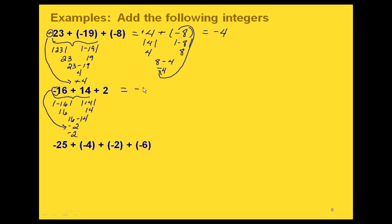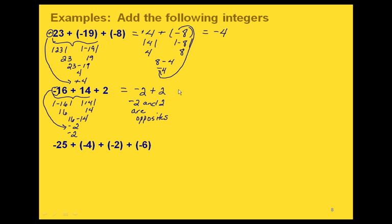So now we have negative 2 plus 2. We could use either of our two different methods. But we could also notice that these are opposites of each other — negative 2 and 2 are opposites. That means we can use the rule that if you add two numbers that are opposites of each other, you get 0. So we were able to do that without any calculations, just by noticing the numbers are opposites of each other.